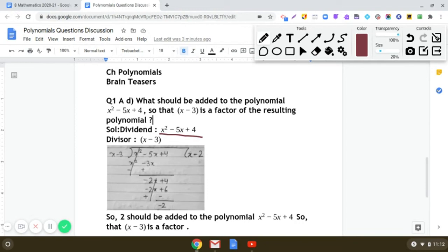Yes, you are right. We will be adding 2 to x² - 5x + 4, so that when we divide x² - 5x + 6 (because when we add 2 to x² - 5x + 4 it becomes x² - 5x + 6) by (x - 3), we get the remainder as 0. And in that case, (x - 3) will be a factor of x² - 5x + 6.